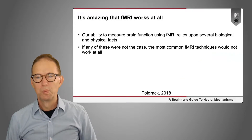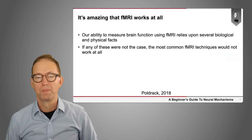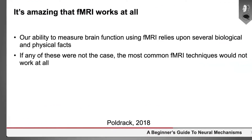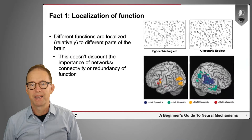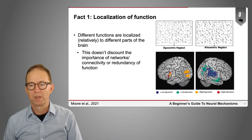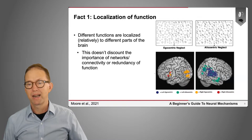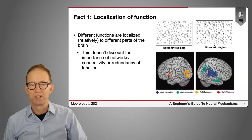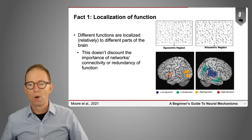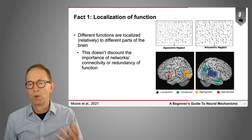It's amazing that fMRI really works at all. Our ability to use fMRI to measure brain function relies on a number of biological and physical facts, and if any of these were not the case, fMRI just wouldn't work. The first is that brain function is relatively localized — for any particular cognitive function, it generally relies not on the entire brain but on a subset of brain regions. This doesn't discount the importance of network integration, connectivity, or redundancy of function, but nonetheless there exists a relative localization of function.